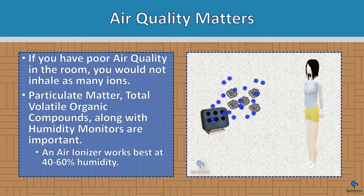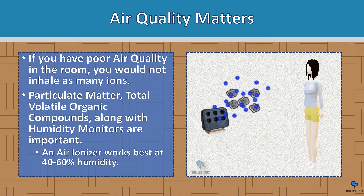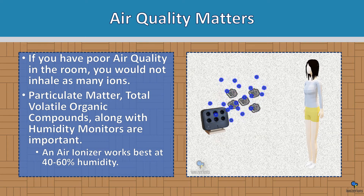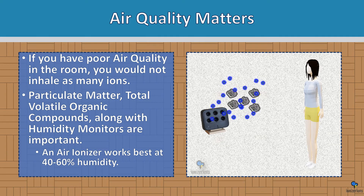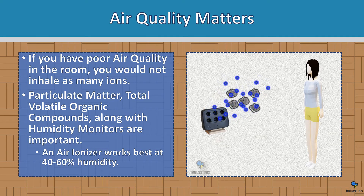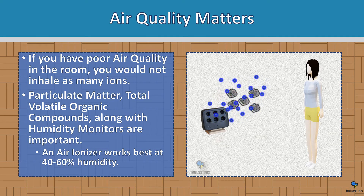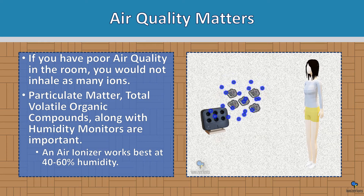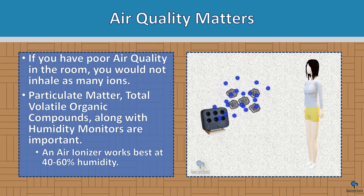Air quality matters. If you have poor air quality in the room, you would not inhale as many ions. Particulate matter, total volatile organic compounds, along with humidity monitors are important. An ionizer works best at 40 to 60% humidity — it will work outside of this range, but that's the best range to get the best ions.